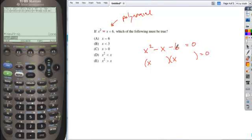So here if I look for my two binomial factors that have a product of negative 6 and a sum of negative 1, get negative 3 and a plus 2.